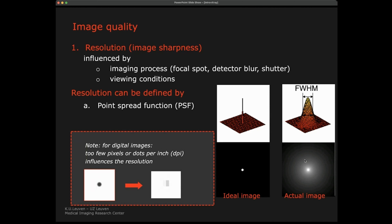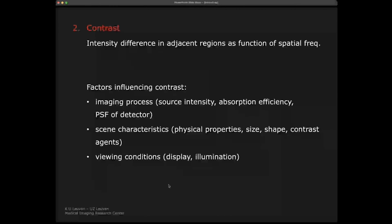What is important is the full width at half maximum — what is the smallest object we can see and how does it appear? One phenomenon is partial volume effects: if we have a very small tumor, its information can be spread over different pixels, so the intensity can go down. Because of the size of an object, its apparent intensity in the image can also be different. These are things to keep in mind.